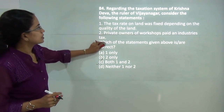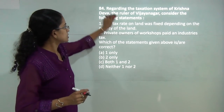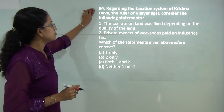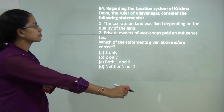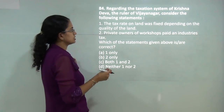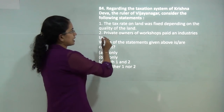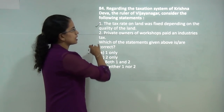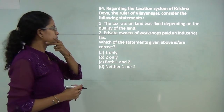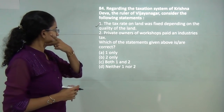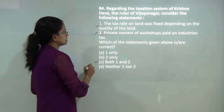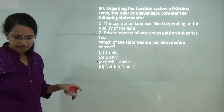Regarding the taxation system of Krishnadev, the ruler of Vijayanagara: the tax rate on land was fixed based on the quality of land, and private owners had to pay the industrial tax. So both 1 and 2 would be the correct answer, and C would be the correct answer. We will cover this more in the section on general history.